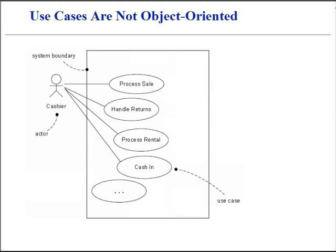There is nothing object-oriented about use cases in functional requirements. When describing use cases, we are not doing object-oriented analysis. This is not a defect, but a point of clarification. Indeed, use cases are a broadly applicable tool in requirements analysis that can apply to non-object-oriented projects, which also increases the overall usefulness of the requirements analysis method.